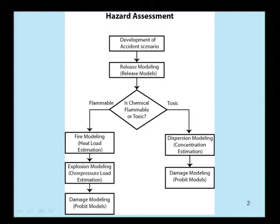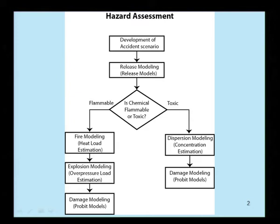If the released chemical is flammable, then discuss about fire modeling — which we call heat load estimation — then discuss and arrive at the explosion models, which we call over pressure load estimation, and then estimate the damage using the probit models. If the chemical release is toxic in nature, discuss about the dispersion model, which gives the concentration estimation of the dispersed vapor cloud, and then again estimate the damage from the probit models. In both cases, probit models are commonly used in the literature.